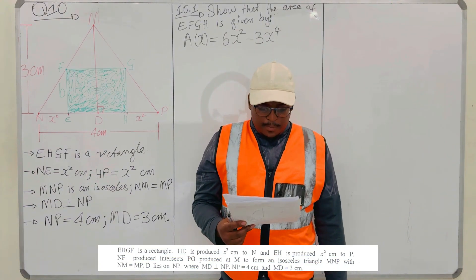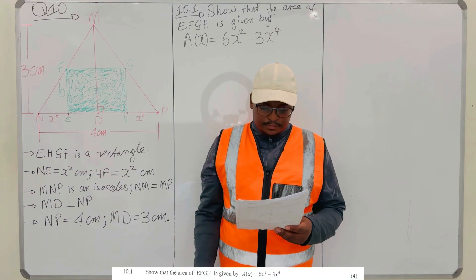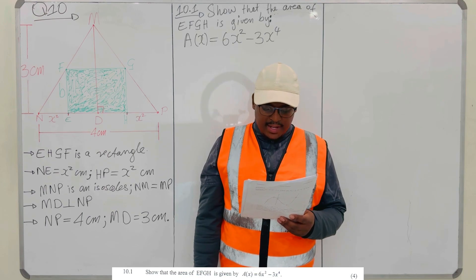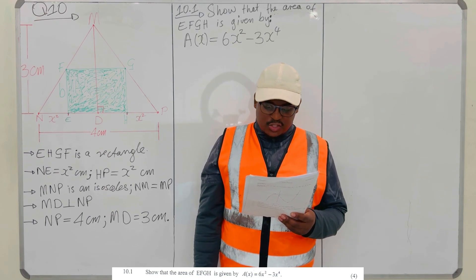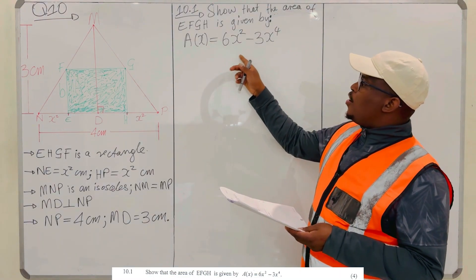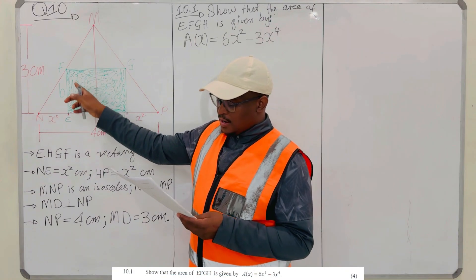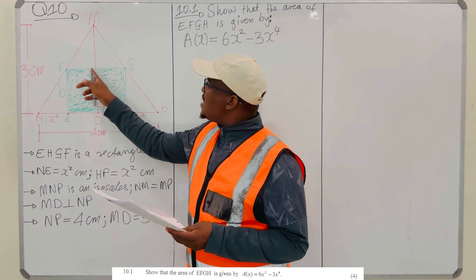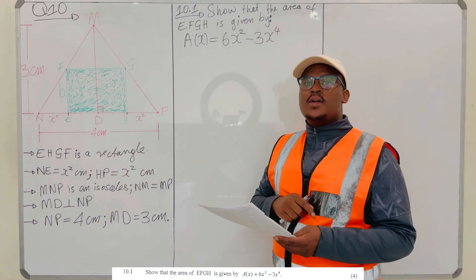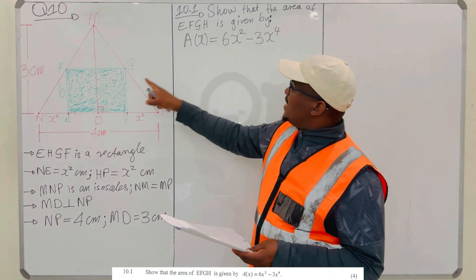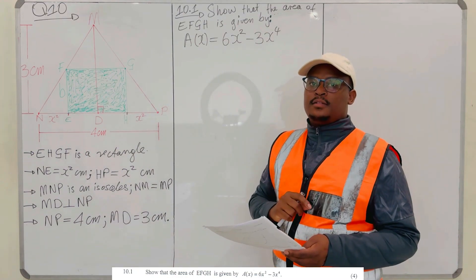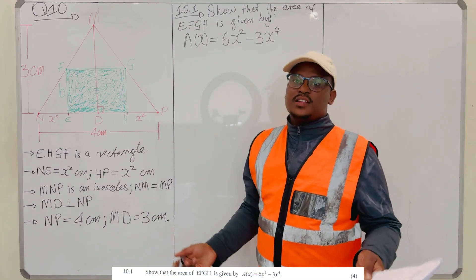Let's go to 10.1. They are saying: show that the area of EFGH is given by A = 6x² − 3x⁴. They want us to show that the area of the shaded rectangle is given by this expression.